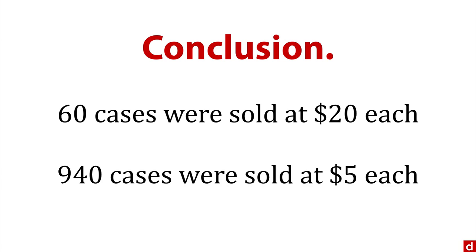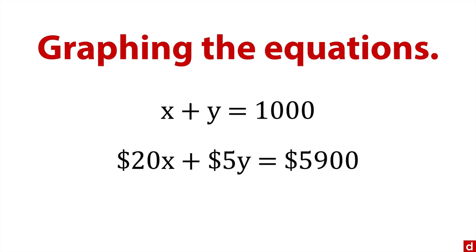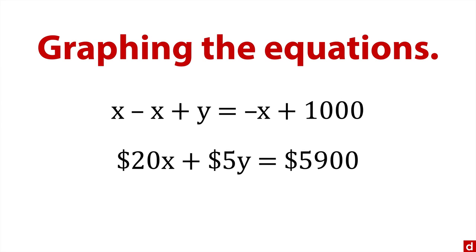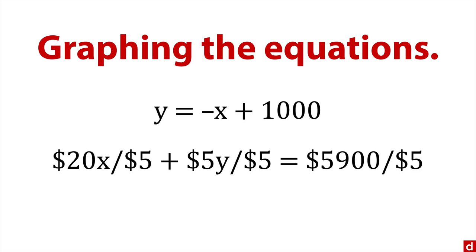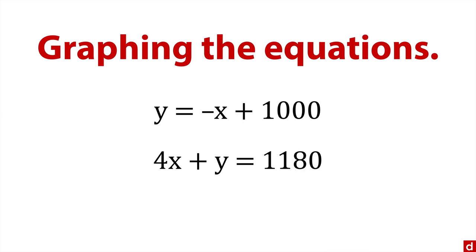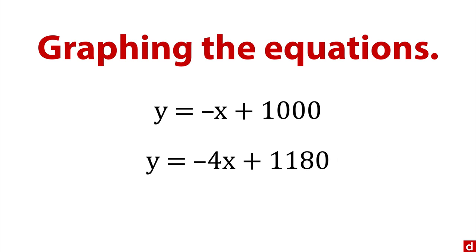You can also do this graphically. I'm going to graph the two equations. Here are the original ones: this one predicts sales, this one gives price. The problem is these aren't in canonical form for graphs — that needs to be y equals something. So we solve both for y. Subtracting x from both sides gives y equals negative x plus 1,000. Then for the price equation, we divide by 5 throughout and subtract 4x from each side, and we're left with y equals negative 4x plus 1,180.